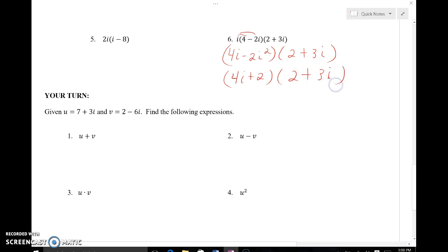things seem to be a little bit less complicated. I could double distribute. 4i times 2 is 8i, 4i times 3i is positive 12i squared. Alright 2 times 2 is 4 and 2 times 3i is 6i.